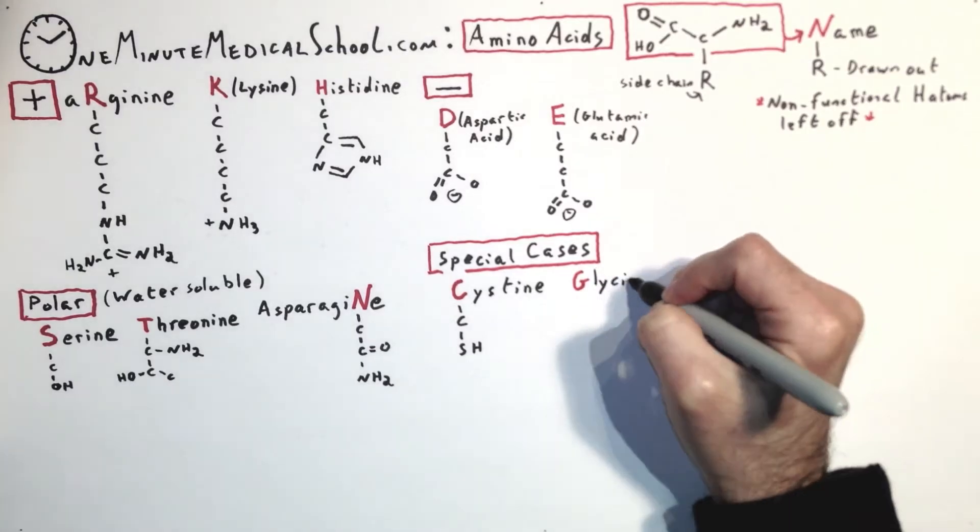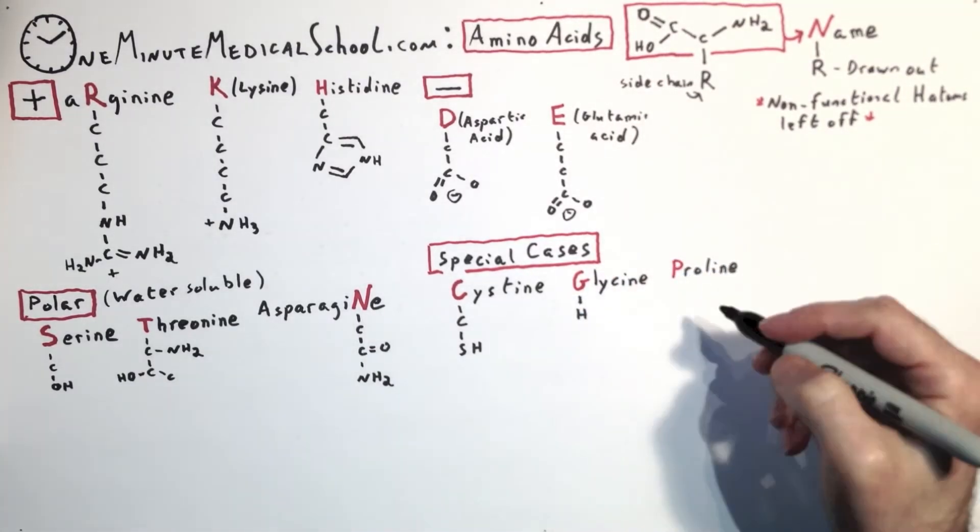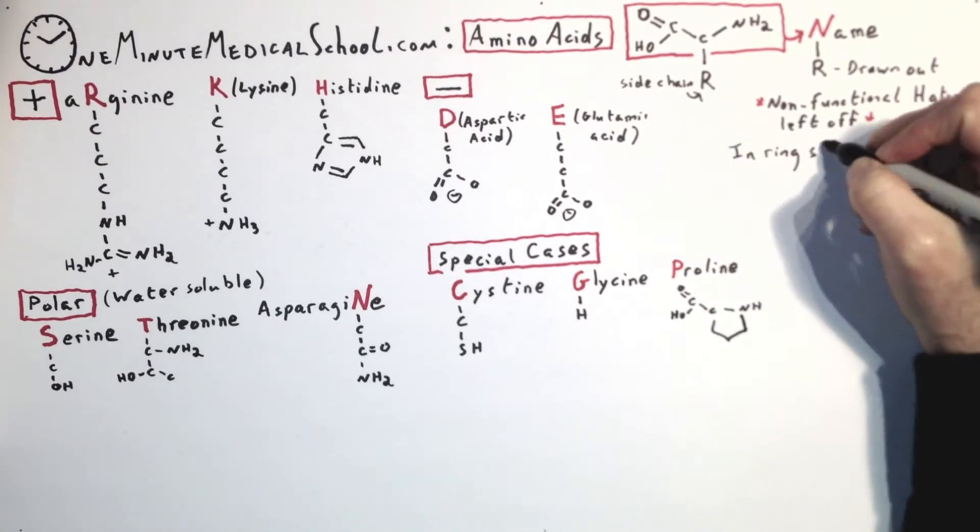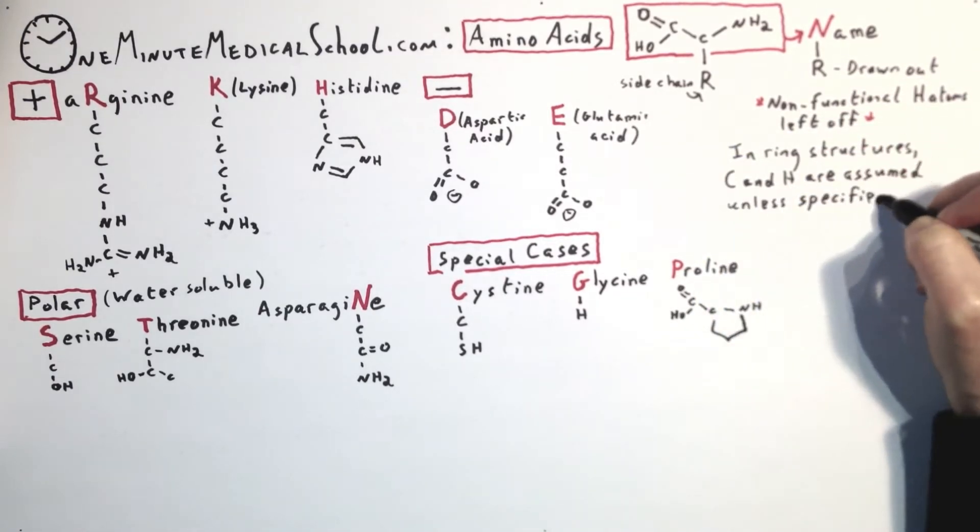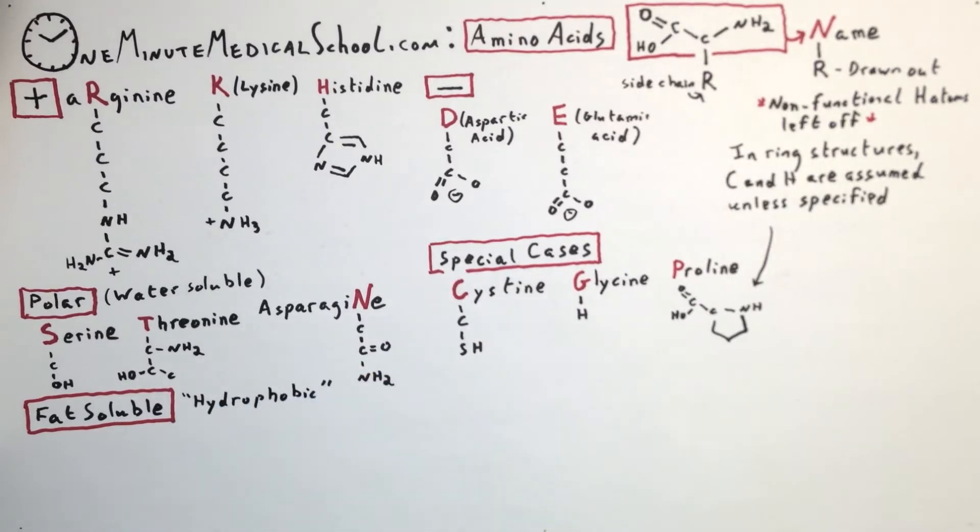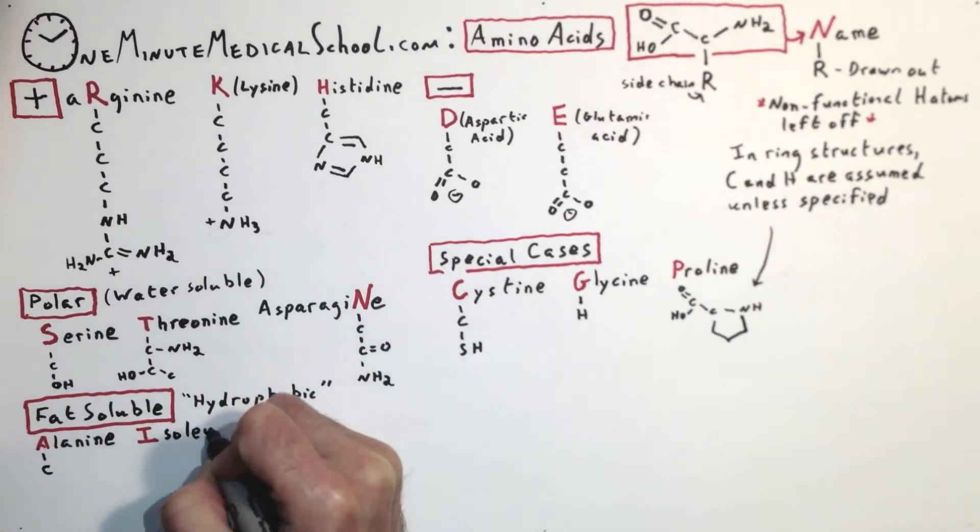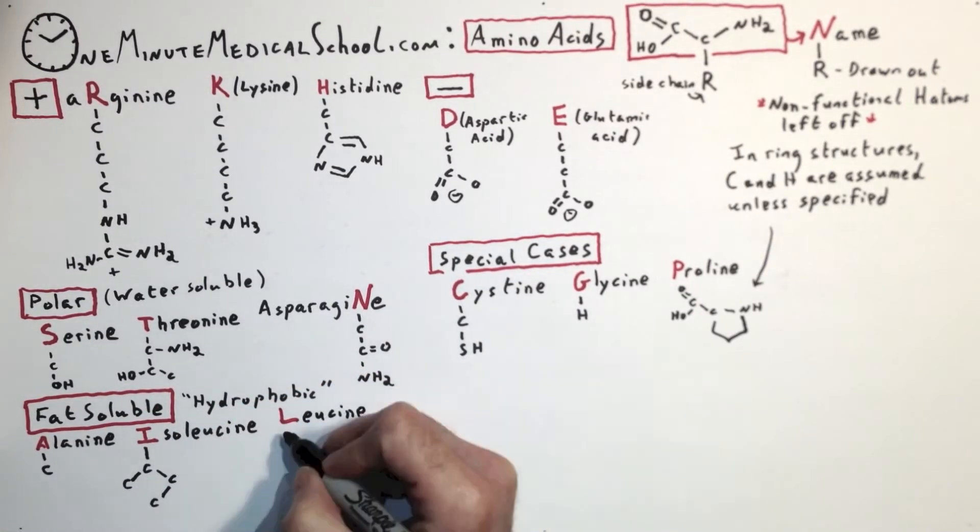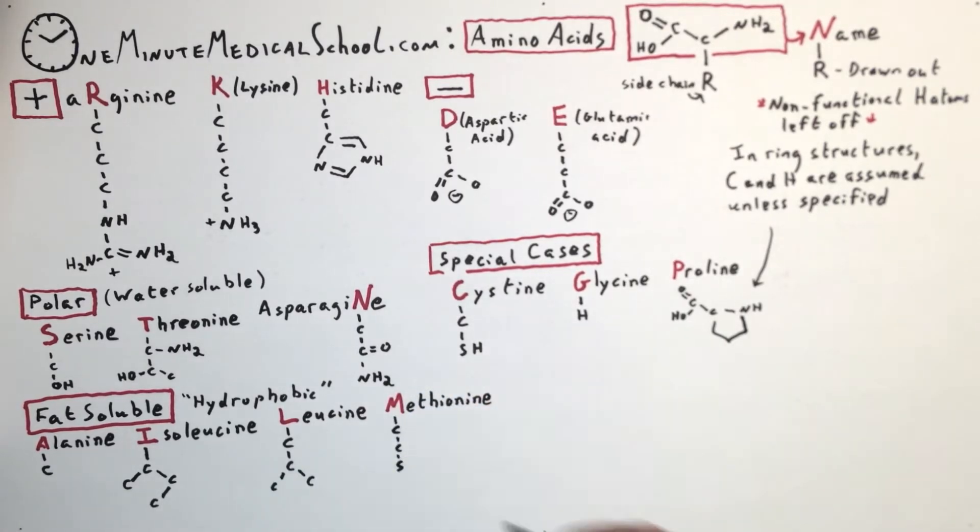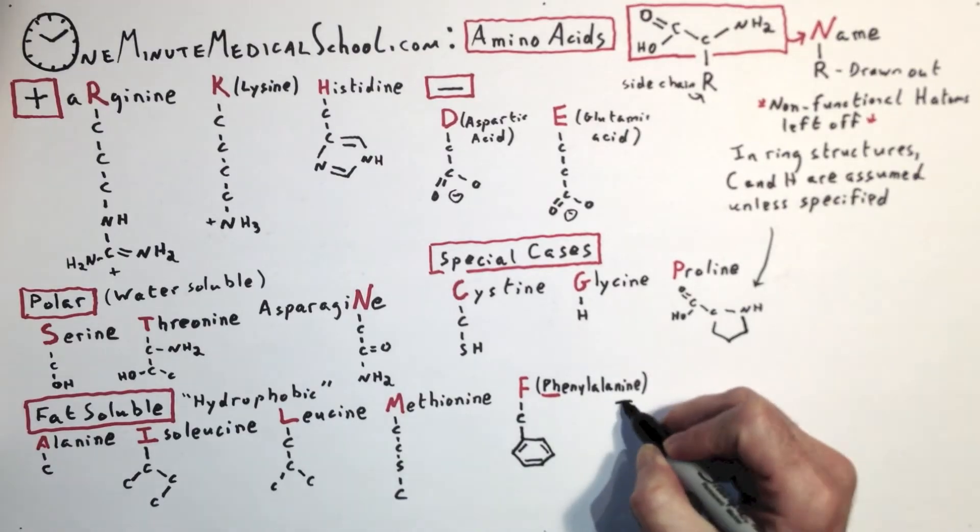The special cases you're just going to have to memorize, but they're simple. Proline's a little bit weird. The carbons wrap back around into the backbone structure. The fat-soluble amino acids all basically have carbons, so there's an even distribution of electrons around the molecule, and they're what we call non-polar, so they dissolve in fat.